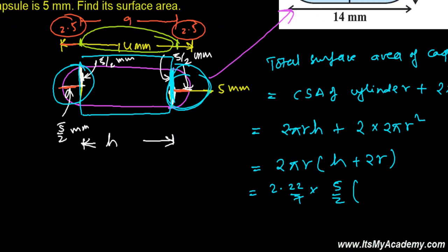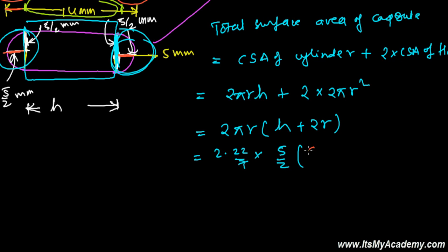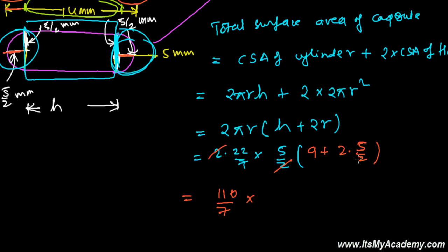Substituting: 2 × (22/7) × (5/2) × (9 + 5). The 2s cancel with the denominator and the 7 cancels, giving 22 × 5 / 7 × 14 / 2, which simplifies to 110/7 × 14 = 220 mm². So the surface area of the capsule is 220 mm².